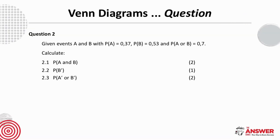In question 2 we're given events A and B, with the probability of A being 0.37, the probability of B being 0.53, and the probability of A or B being 0.7, and we're asked to calculate three probabilities.